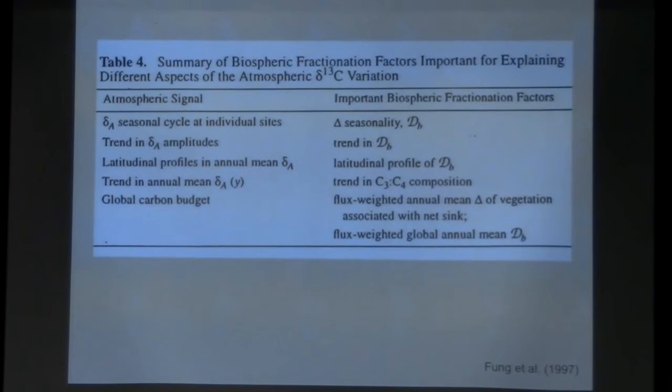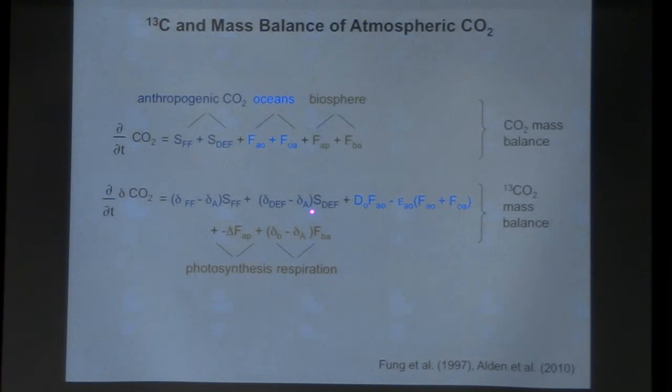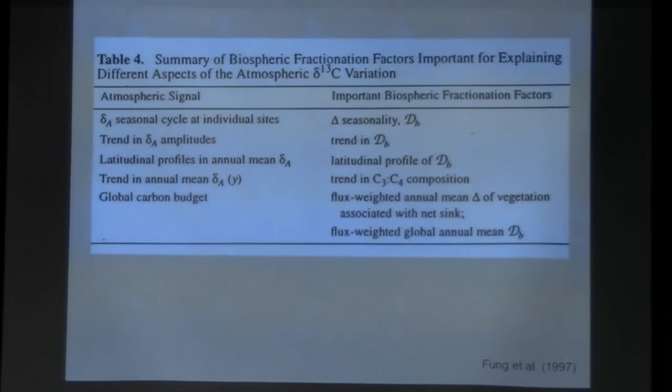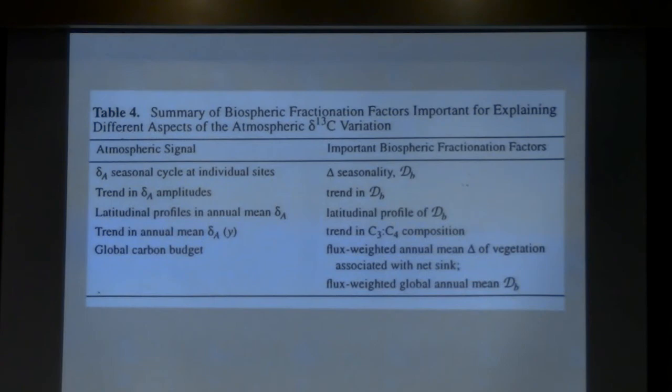If you want to describe these features of the atmospheric signal, these processes are important. What you see here is the seasonality of photosynthetic discrimination on land. This capital D is a disequilibrium. The idea of disequilibrium—we're going in detail in a sec—corresponds to the difference here. Land disequilibrium is the difference in the signature of the photosynthetic products and the signature of the respiratory products. Other features that are really important: C3-C4 distribution on the planet. As I said, C4 photosynthesis looks like ocean uptake in terms of its influence on atmospheric CO2, so you have to pay attention to the distribution of C4 plants if you're going to use C13 in an inversion.